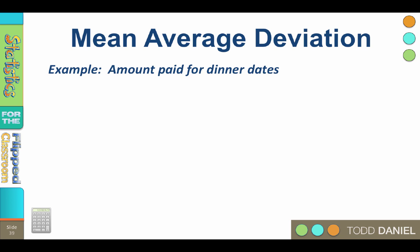For example, here are some data for the amount paid for a dinner for two on a college date. These are college students, so the values are small. Add them up, divide by n, and the mean equals 21.